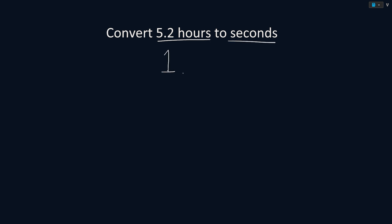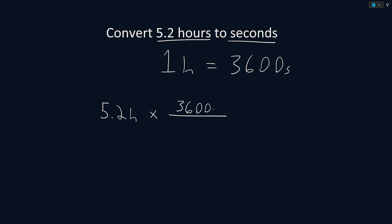Convert 5.2 hours to seconds. We know that 1 hour is equal to 3,600 seconds. To convert our units, we start with the units that we were given of 5.2 hours and multiply by a fraction that cancels out our units. We will put seconds on top and hours on the bottom. Solving this, we get that 5.2 hours is equal to 18,720 seconds.